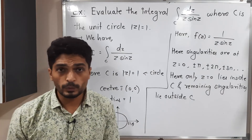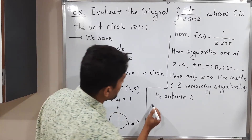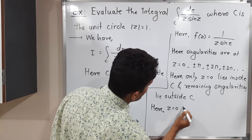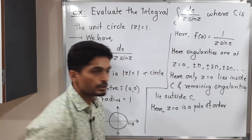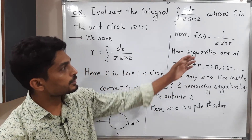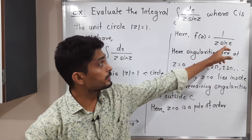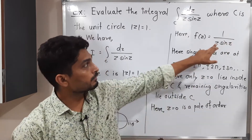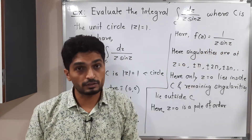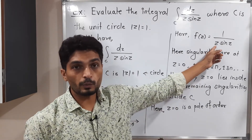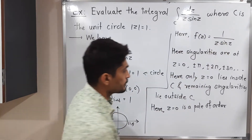We have to find the residue only at z = 0. But first, we need to find the order of that pole. At z = 0, you might observe that z has power 1, suggesting a pole of order 1. However, sin(0) = 0 as well, so one more singularity is generated at z = 0 from the sine term. Therefore, z = 0 is a pole of order 2.